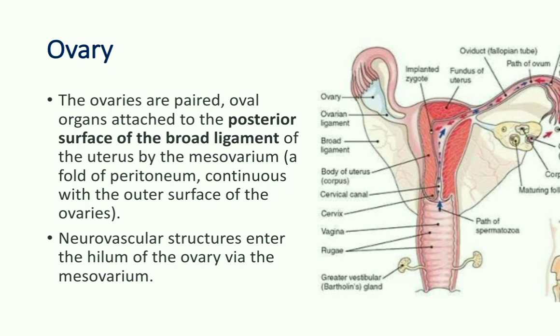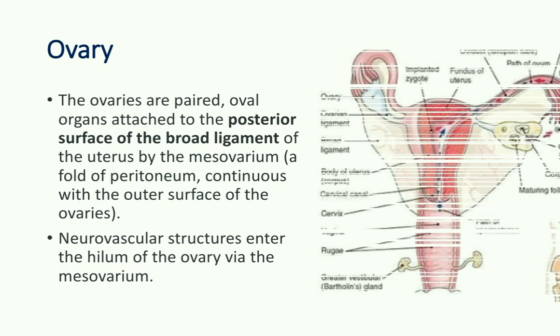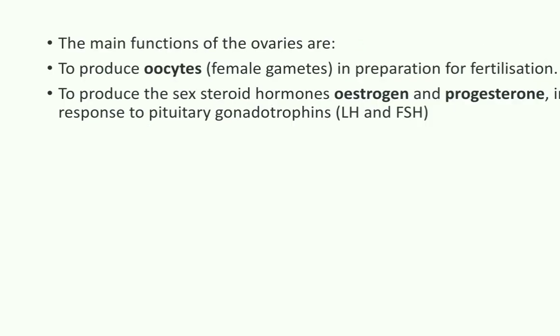The neurovascular structures enter the hilum of the ovary through the meso-ovarian. The main functions of the ovaries are to produce oocytes and to produce the sex hormones estrogen and progesterone.